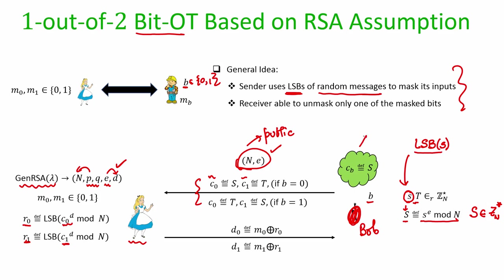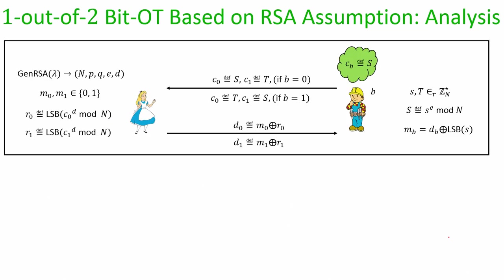Bob wants to receive M_B. He takes the masked message D_B which Alice sent and XORs it with LSB(s). This cancels the effect of R_B — since M_B was XORed with R_B, and R_B is LSB(s) which Bob knows. That is the simple protocol. Now let us analyze why this protocol maintains Alice's privacy and Bob's privacy.